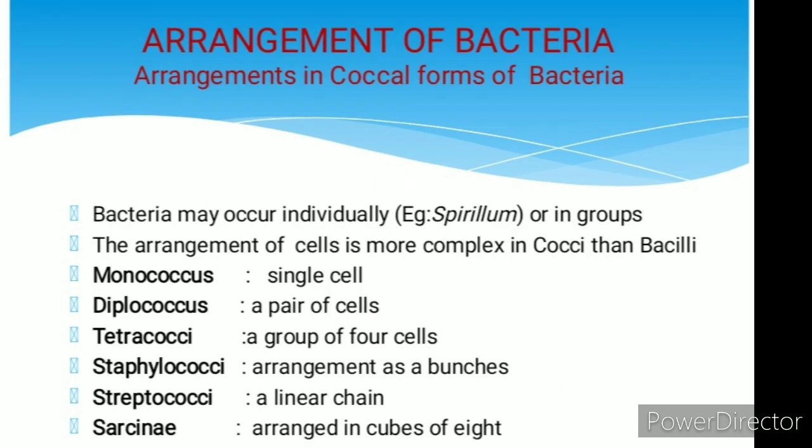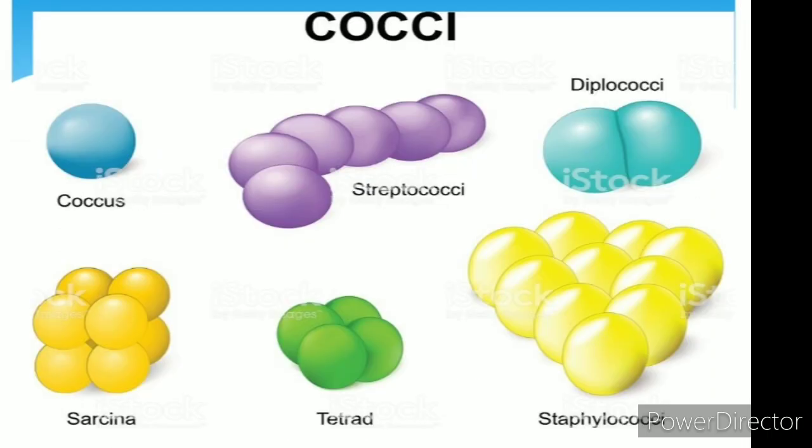Arrangement of bacteria: the arrangement of cells is more complex in cocci than in bacillus. If arranged as a single cell, they are called monococcus. Arranged as a pair of cells, they are called diplococcus. A group of 4 cells is called tetracoccus. Arranged as a bunch of cells, they are called staphylococcus. Arranged as a linear chain, they are called streptococcus. Cells arranged in a cube of 8 are called sarcina.